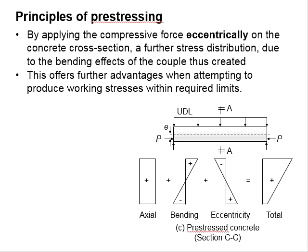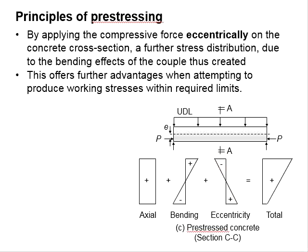When the compressive force is applied at an eccentricity from the neutral axis, the member tends to bend upward. This leads to tension in the top of the beam while compression at the bottom of the beam. The response is opposite to the bending stress generated by the applied forces.